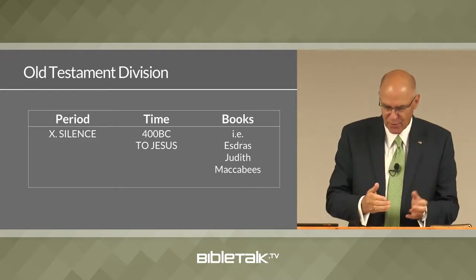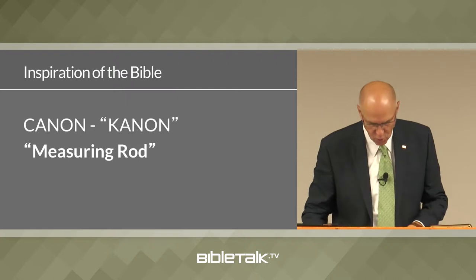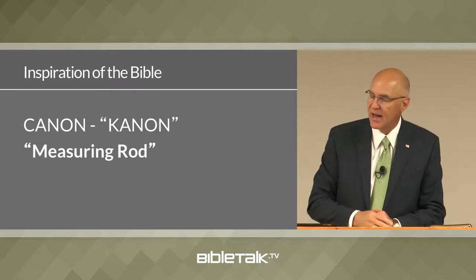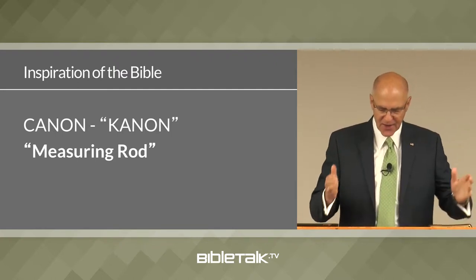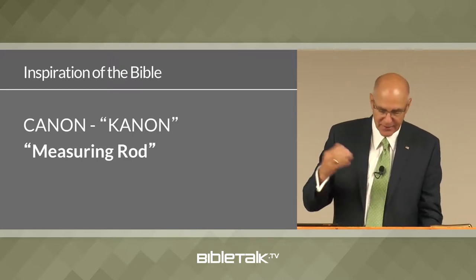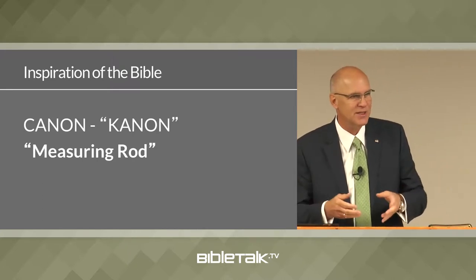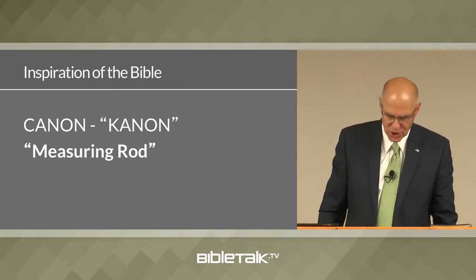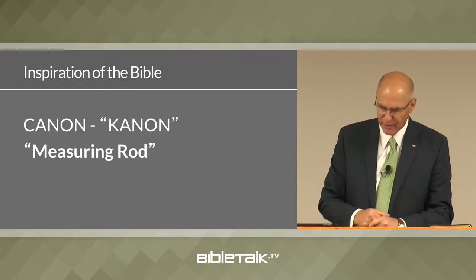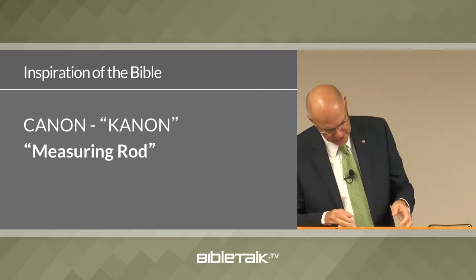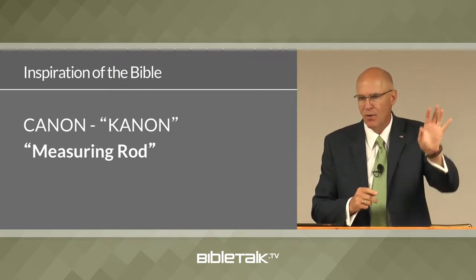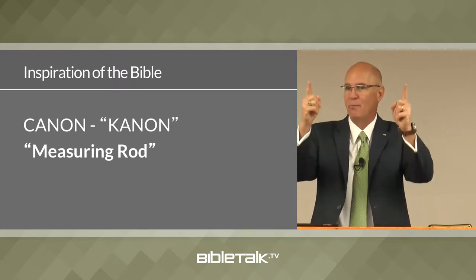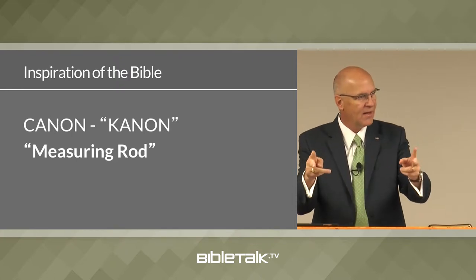Today we move on to the New Testament record and how it was recorded. There were a lot of books written about the life of Jesus, and several written by the apostles and their disciples. The question is how did they decide which books actually belonged in the New Testament? Out of hundreds written about Jesus and the church, how did they narrow it down to 27? The books that make up the New Testament are called the canon — a Greek word meaning a measuring rod. The books that measured up are the ones that belong in the canon.